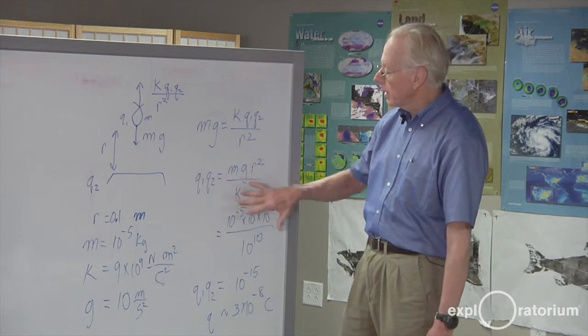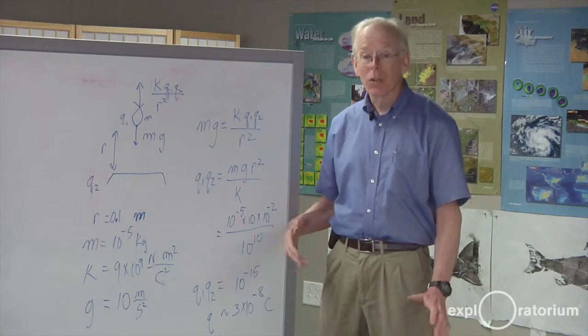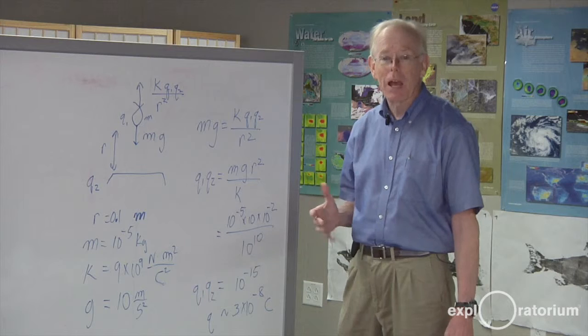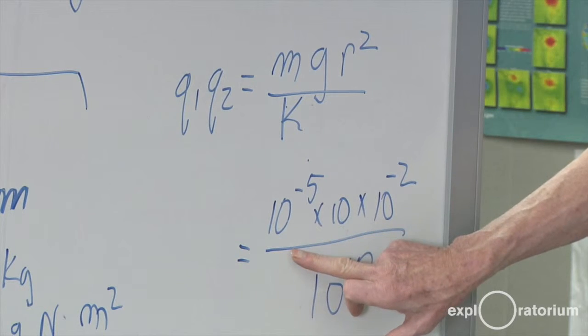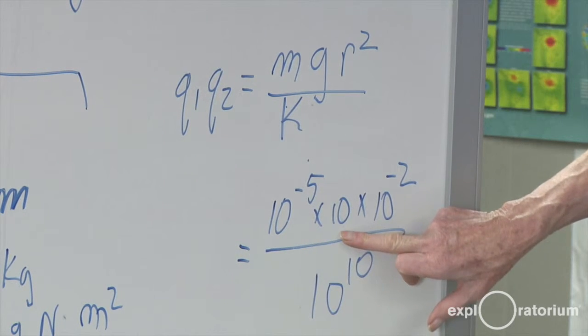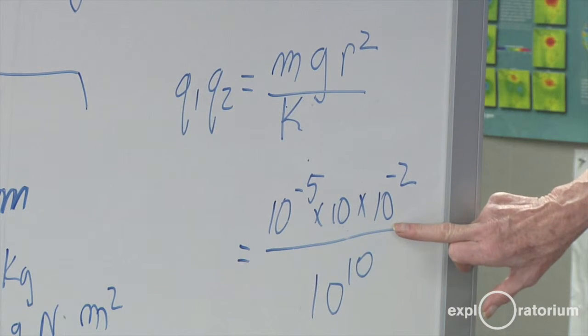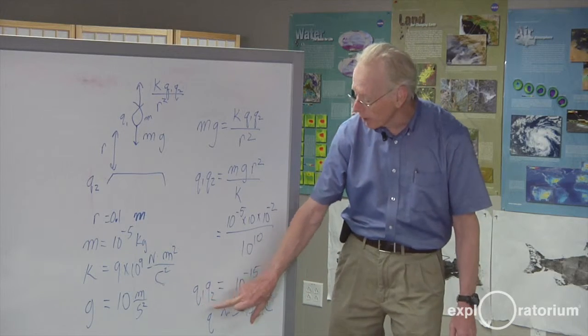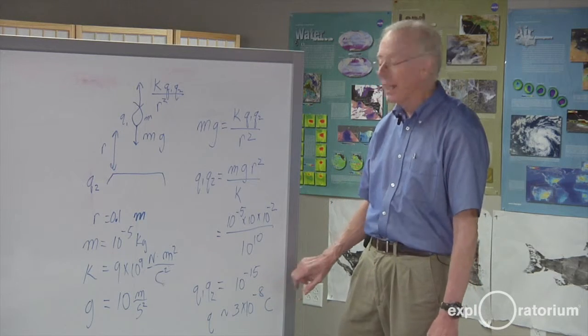So I wrote the equations and plugged in my terms. Now this is a rough estimate. So I rounded everything off to its nearest power of ten. And so I put in the mass times the acceleration of gravity times the distance between the two squared divided by the constant. And that gave me that charge one times charge two is ten to the minus fifteenth.